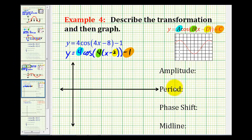Now let's go ahead and describe the amplitude, period, phase shift, and midline. The amplitude is the absolute value of A, so our amplitude is equal to 4.